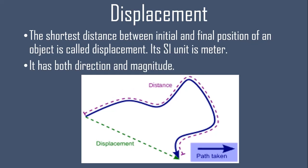Next, displacement: the shortest distance between the initial and final position of an object is called displacement. Its SI unit is also meter. The difference is that displacement is the shortest path between final and initial position, and it also involves direction.